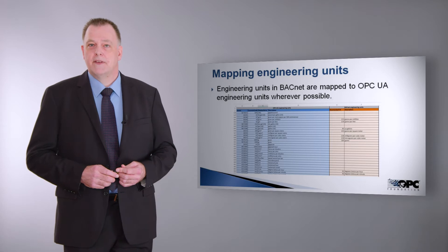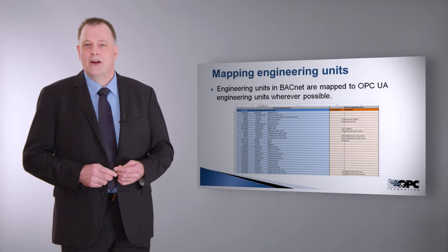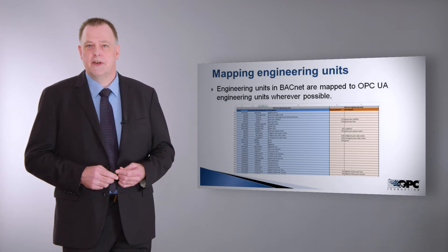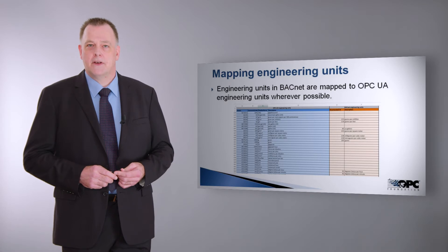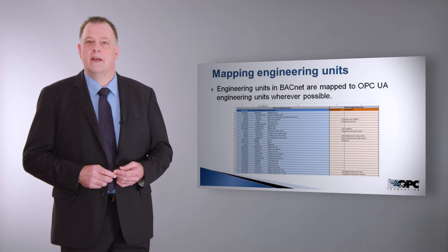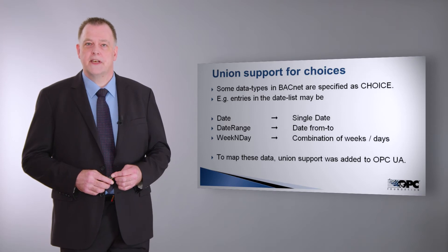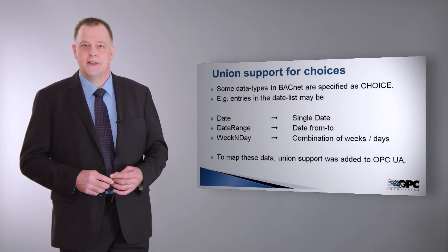Mapping the engineering units was a bit of a challenge. OPC UA has a total of more than 1300 engineering units, where BACnet only specifies about 200 engineering units. This table shows how the BACnet engineering units are mapped into the OPC UA engineering units using an Excel spreadsheet file. Some data points in BACnet are so-called choices — a choice may be a collection of different data types combined into a single one. For example, a date entry can be a single date, a date range, or a weekend day, which is a combination of weeks of the month and the days. This required OPC UA support for so-called unions, which allows mapping these BACnet choice data types into OPC UA unions.